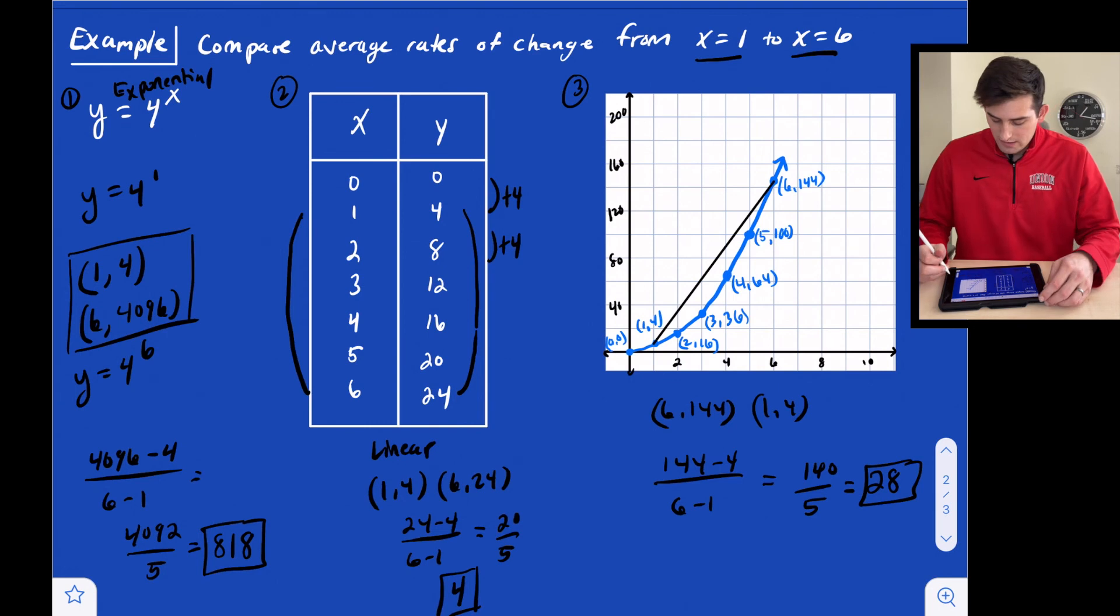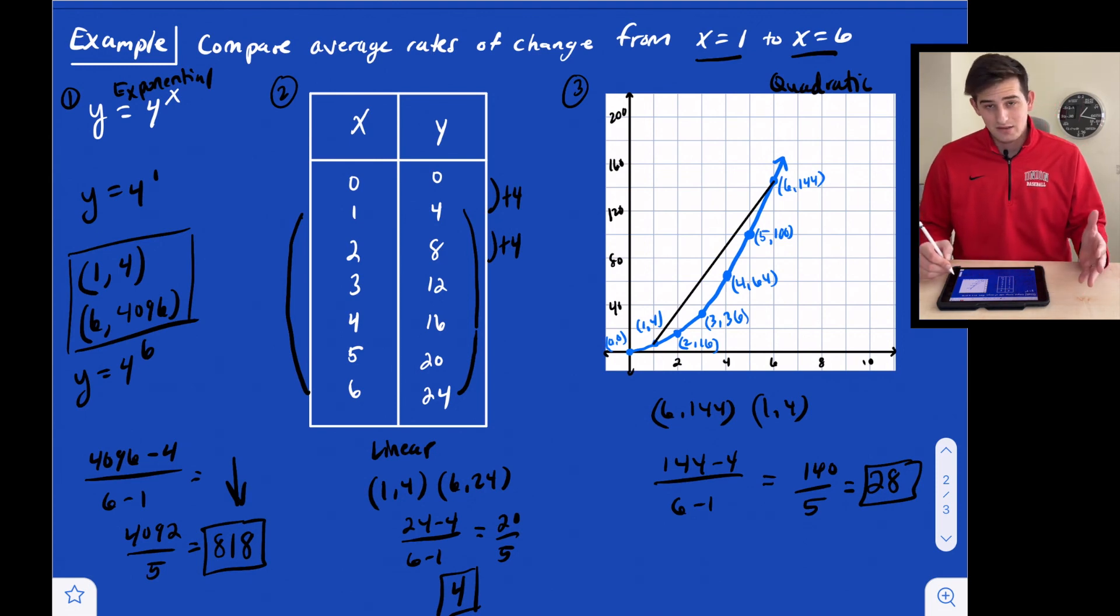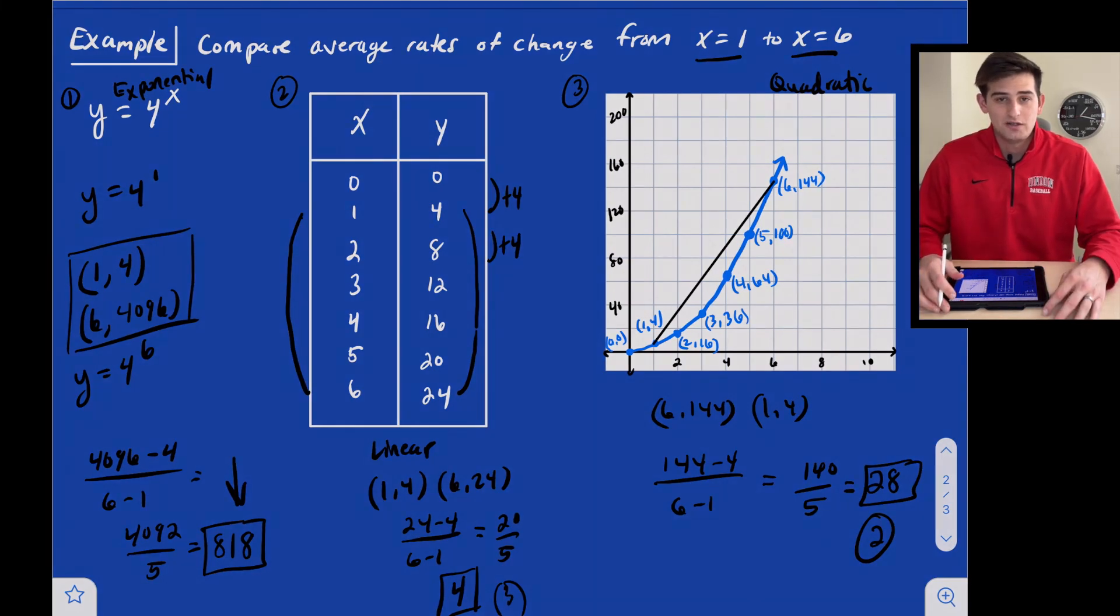We have exponential on number one, and look at its average rate of change: 818. So the first one, just like that comparison we saw. Then the second highest was quadratic. And then finally, the third highest was linear. That's how you compare average rate of change for non-linear functions.